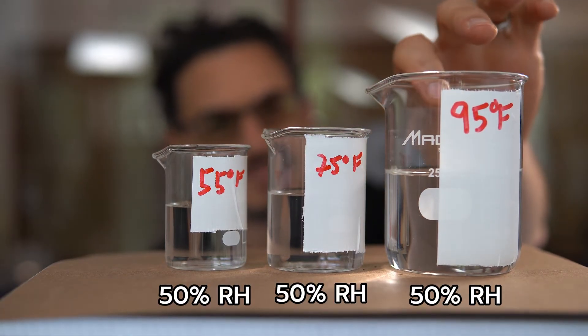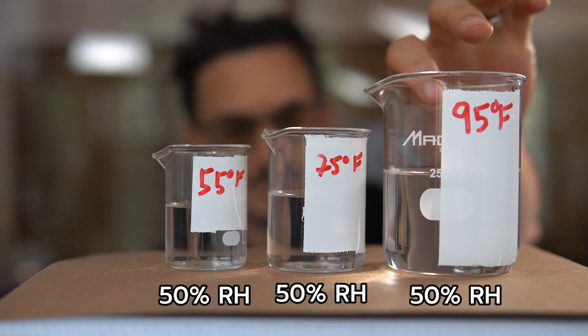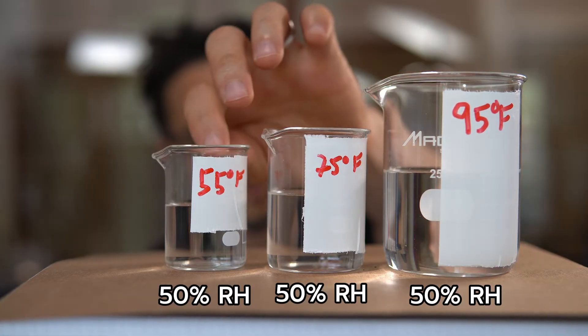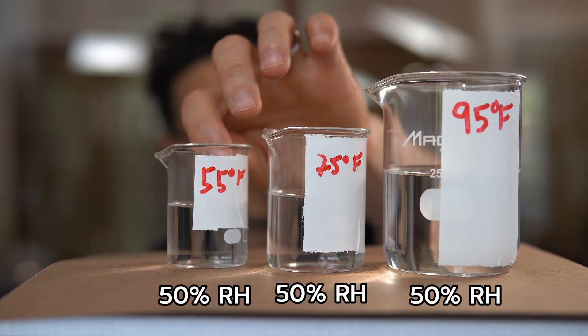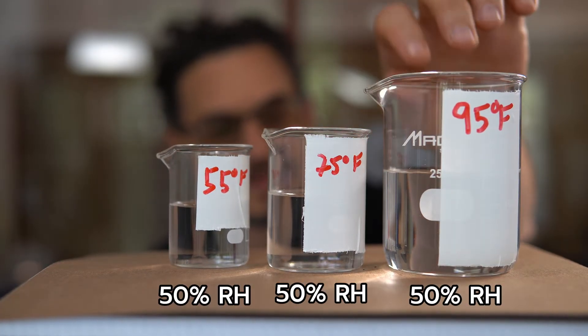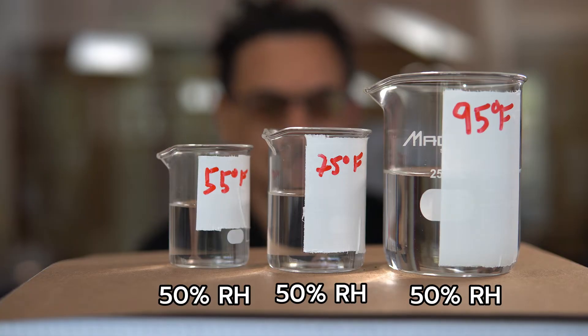Now, if you were 95 and 50% down in Florida, and you were 55 degrees and 50% up here in the mountains, it would be much less humid here, but they both have the same relative humidity.